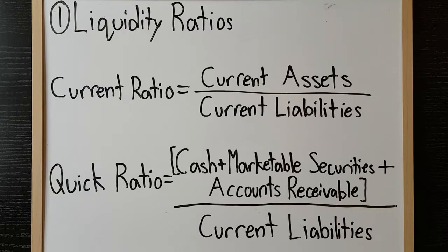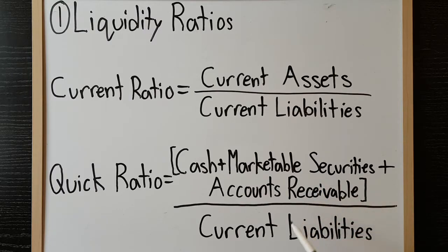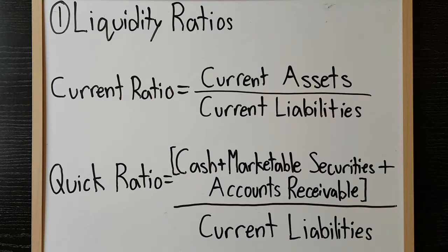Another common liquidity ratio is the quick ratio, calculated as cash, marketable securities, and accounts receivable divided by current liabilities. The quick ratio is similar to the current ratio, only it restricts the numerator to only the most liquid current assets that can be almost immediately converted to cash.